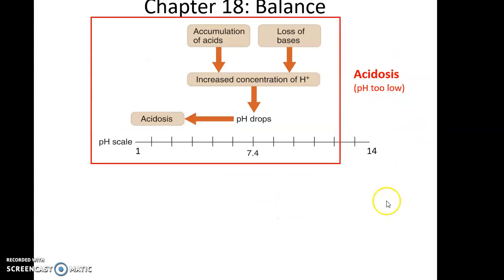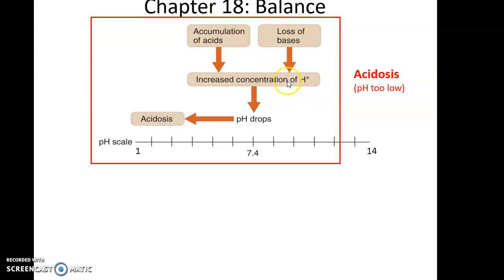How can acidosis happen? Either you have an accumulation of acids that increase the amount of hydrogen ions, dropping the pH, or you have a loss of bases. Now that the relative amounts of hydrogen ions and things that bind to them have changed, this causes a relative increase in hydrogen ions, leading to a pH drop and potential acidosis.